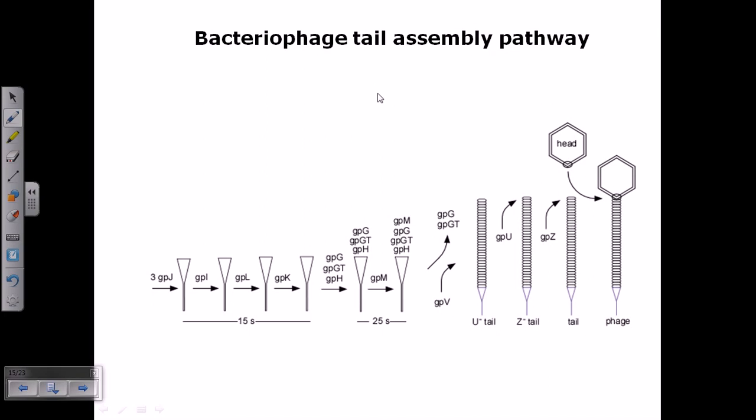Here comes the bacteriophage tail assembly pathway. At the very beginning of the tail is an immature part with only gp proteins, or glycoproteins. These include gp j, gp i, k, l, m, and p. Three gp j proteins first assemble to provide this kind of amateur structure, then gp i, gp l, gp k and all of these proteins start to arrange together.